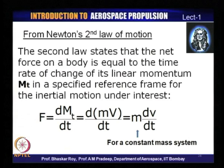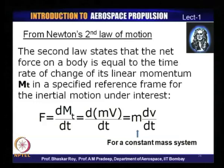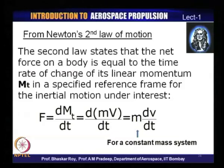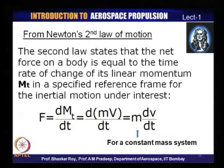Newton's second law states that the net force on a body is equal to the time rate of change of its linear momentum, which we call M_T, in a specified inertial reference frame. This is codified in simple mathematical formulation as F = dM_T/dt. This M_T is the linear momentum, and direction is important.